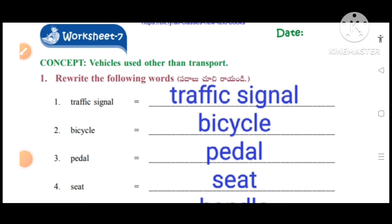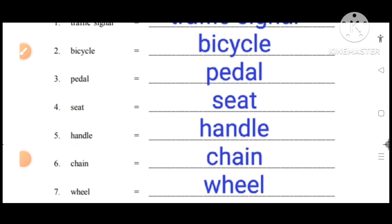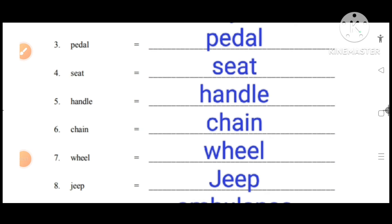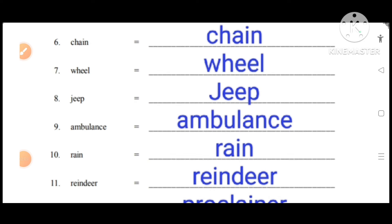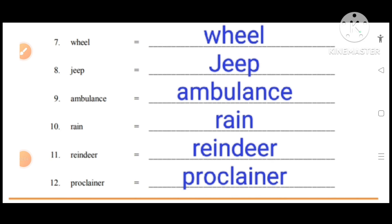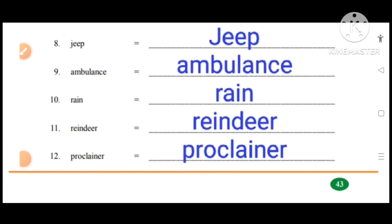Worksheet number 7, concept: vehicles used other than transport. Rewrite the following words: traffic signal, bicycle, pedal, seat, handle, chain, wheel, jeep, ambulance, rhein, reindeer, procliner.